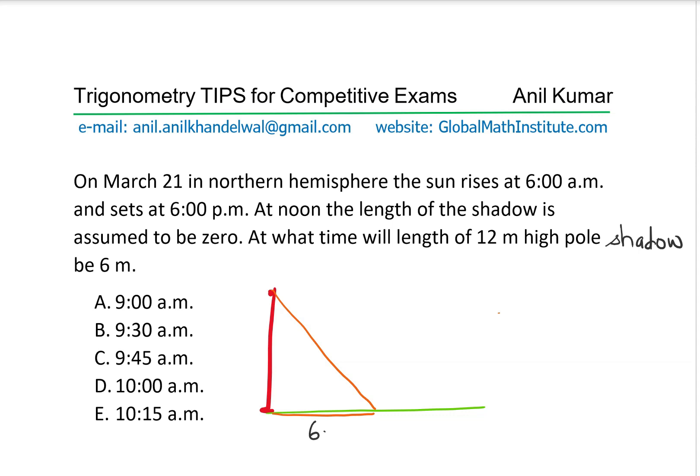There are five choices. I would like you to pause the video and answer the question. I made a sketch: O-P is the pole and O-S is the shadow, where the length of the shadow should be 6 meters for a pole whose height is 12 meters. Five choices are given — you can pause the video and answer the question.